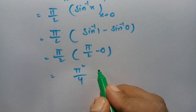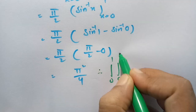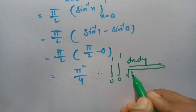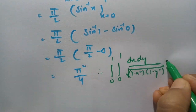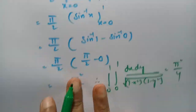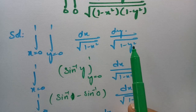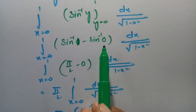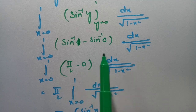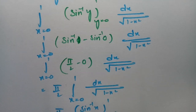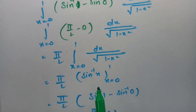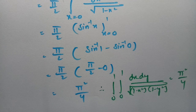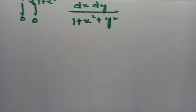So this value is pi square by 4. Therefore the double integral from 0 to 1 and 0 to 1 of dx dy by root over 1 minus x square into 1 minus y square equals pi square by 4. First I integrated with respect to y, getting sine inverse of y, substituted the limits with sine inverse of 1 equals pi by 2 and sine inverse of 0 equals 0, then integrated with respect to x to get pi square by 4.